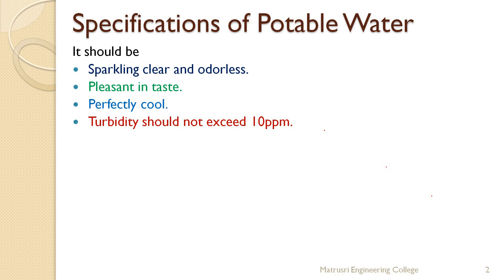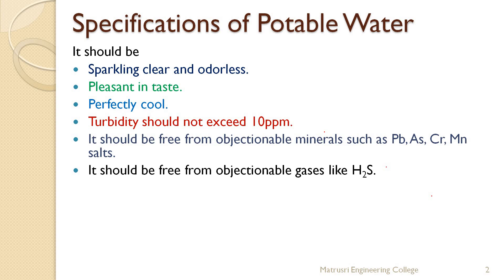When turbidity exceeds 10 ppm, we can see particles floating in the water, which is undesirable. So it should be free from objectionable minerals such as lead, arsenic, chromium, and manganese salts. These are toxic elements, and the drinking water should be free from such toxic element salts.